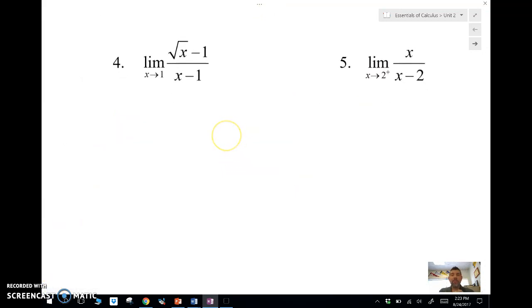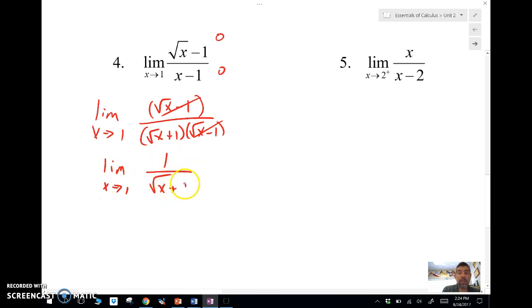Let's take a look at number four here. If I put one in here, I'm going to get zero. One down here, I'm going to get zero. So how are we going to deal with this? You can do one of two things. You can either factor the bottom using a difference of two squares, which is a weird kind of factoring, where you're going to take and say this is square root of X plus one times square root of X minus one, because square root of X times square root of X is just X. And then these two guys are going to cancel out.